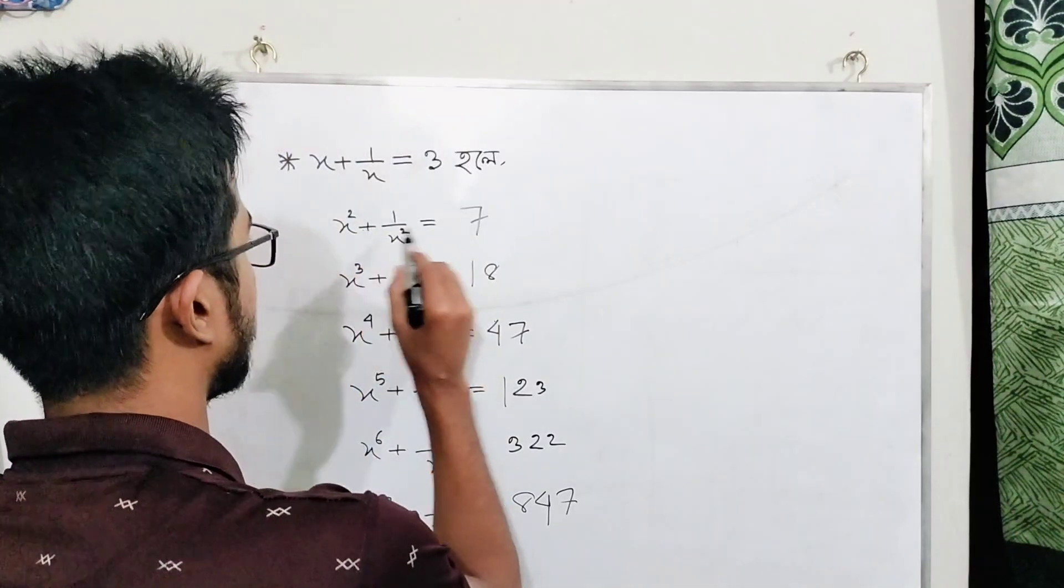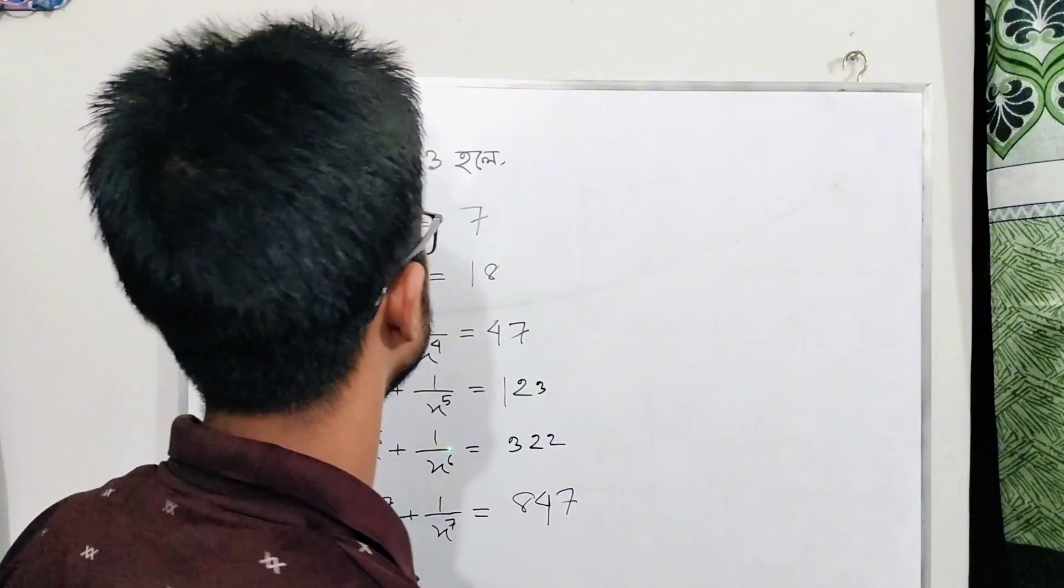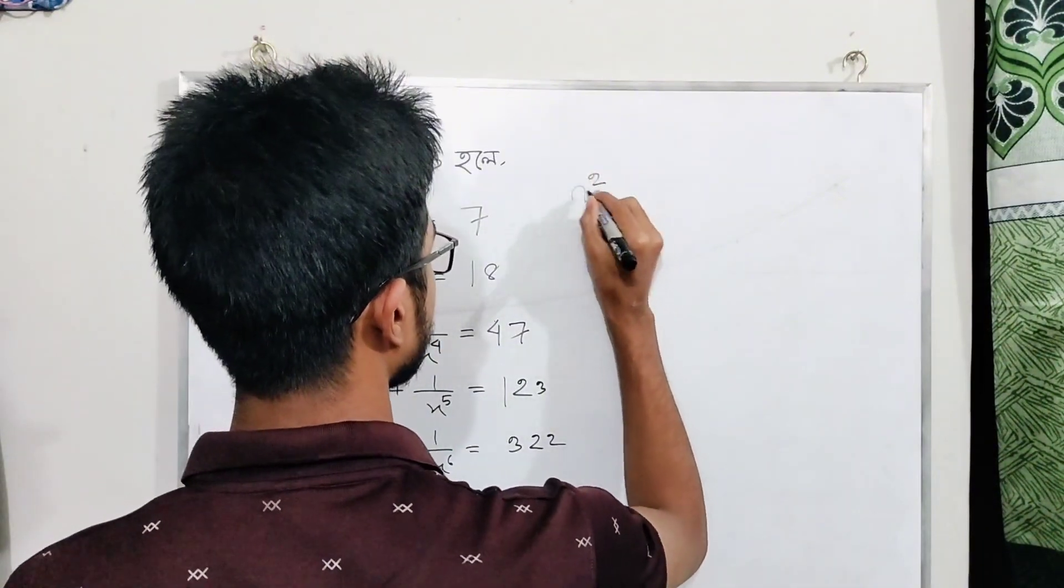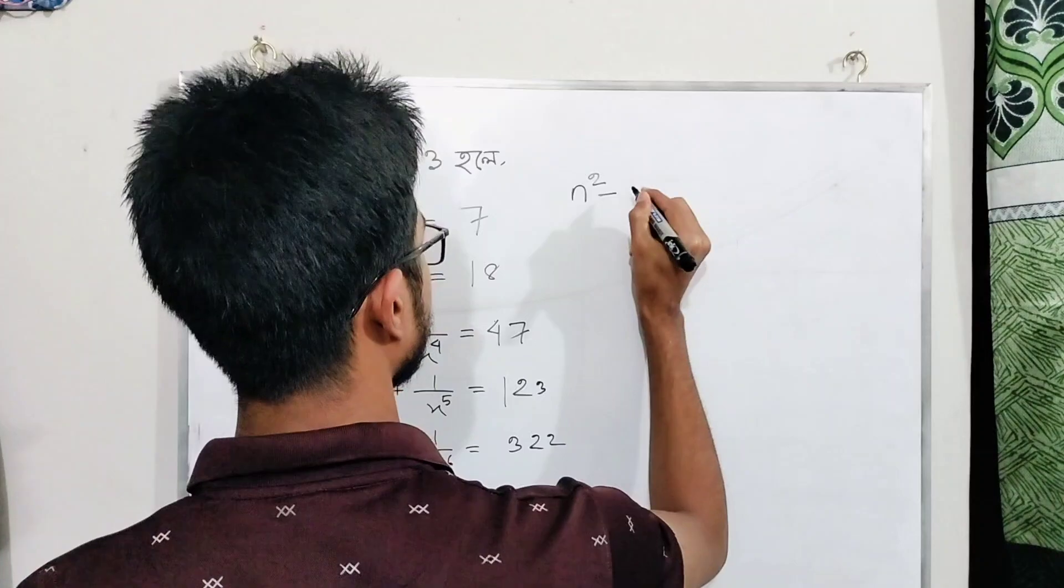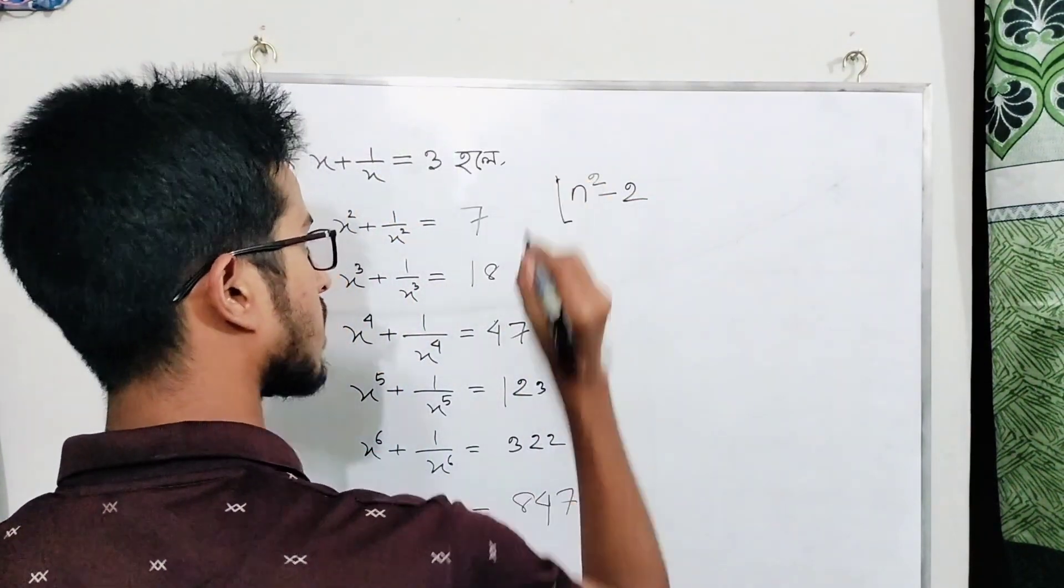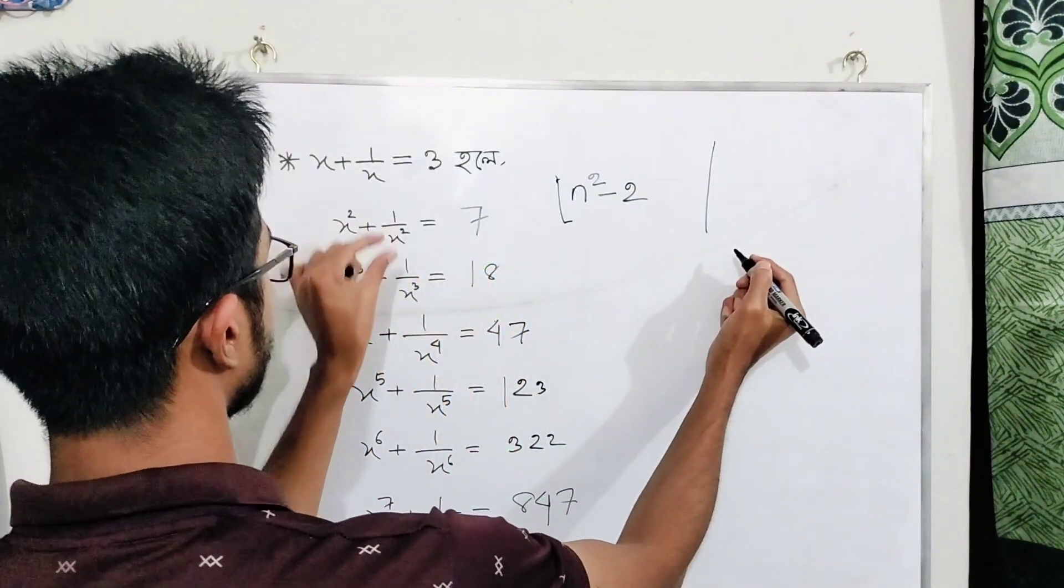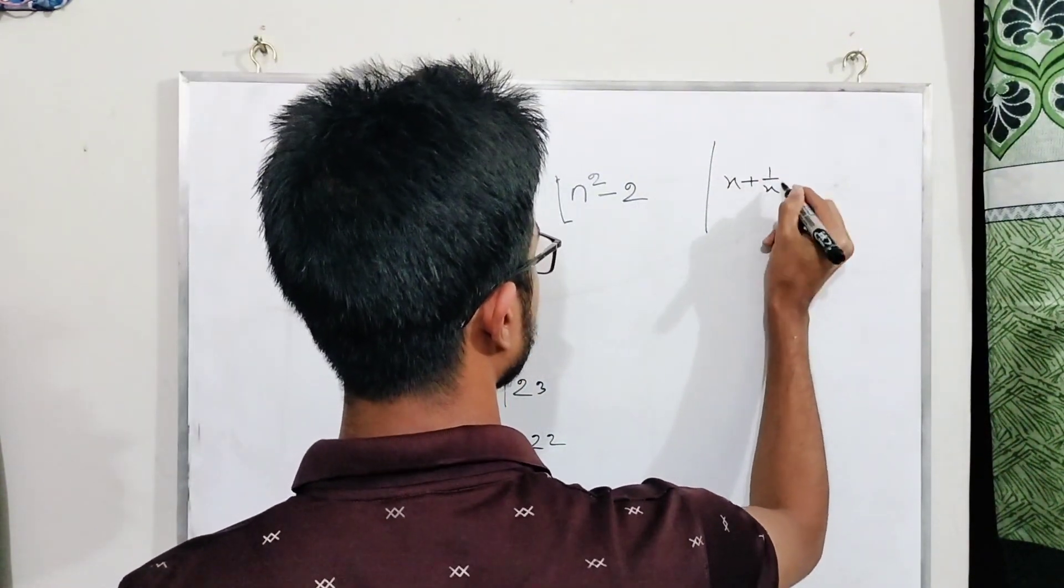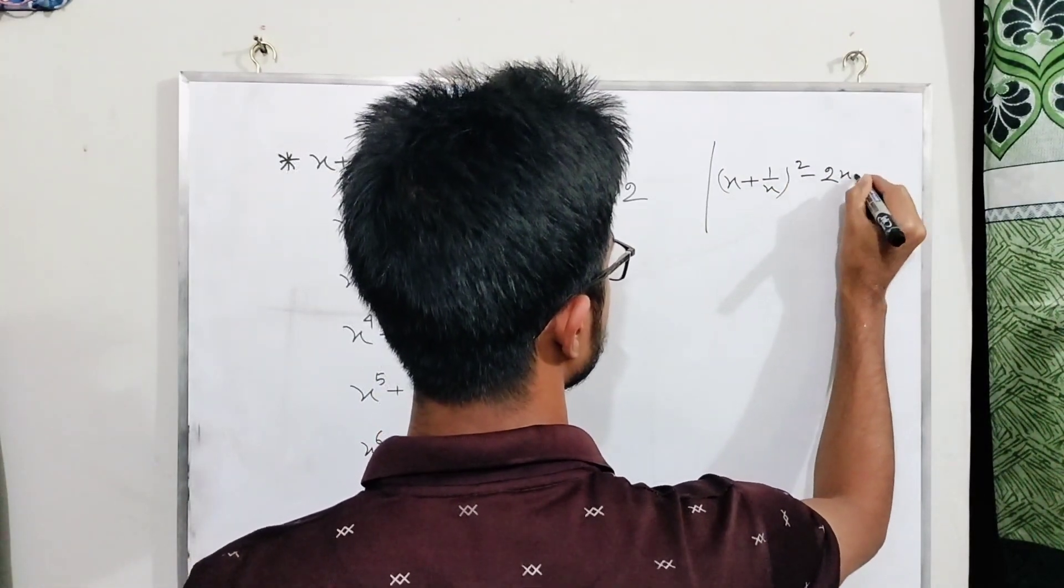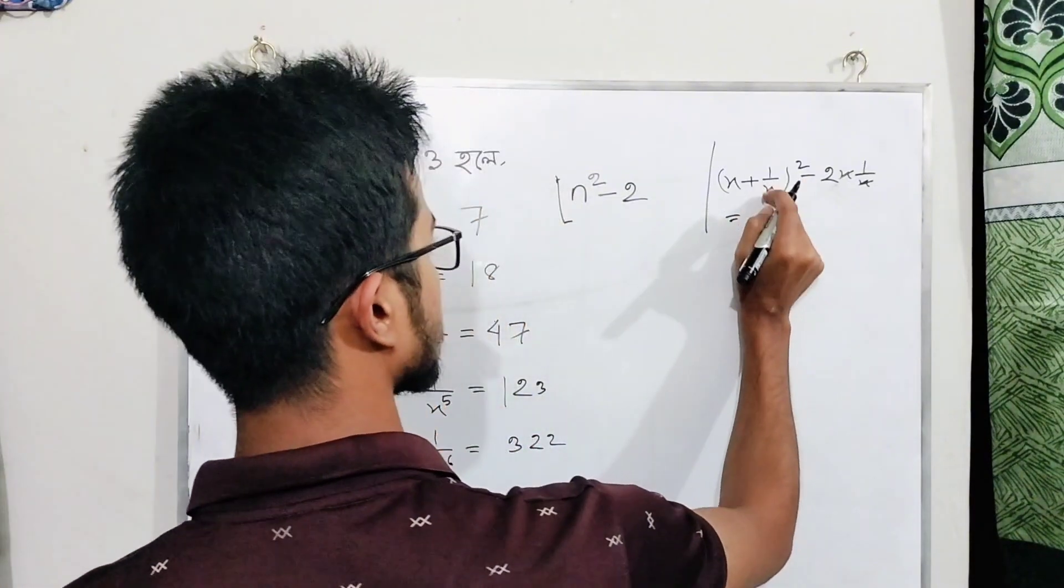Here we have x square plus one by x square. To find this, we use the formula: (x plus one by x) whole square minus two. Using the identity (a plus b) square equals a square plus b square plus twice ab, we can write x square plus one by x square equals (x plus one by x) whole square minus two.